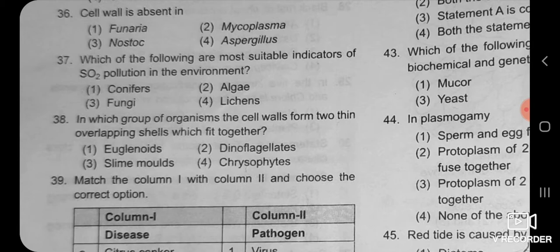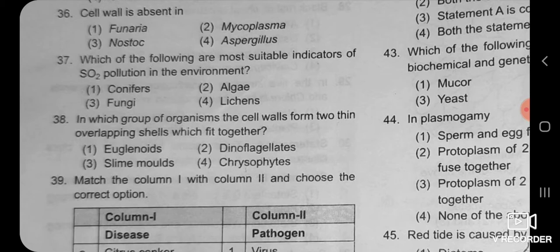Nostoc is an example of blue-green algae. Aspergillus is a fungi. So clearly, mycoplasma is the example where cell wall is absent, because cell wall is present in blue-green algae, bacteria, plants, and fungi. Mycoplasma is the organism which is the smallest, anaerobic, and does not have any cell wall.